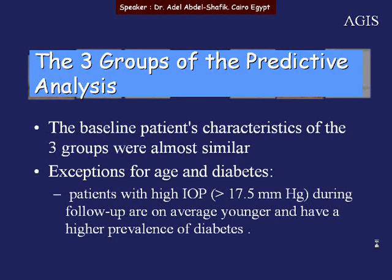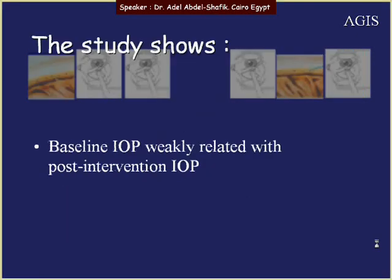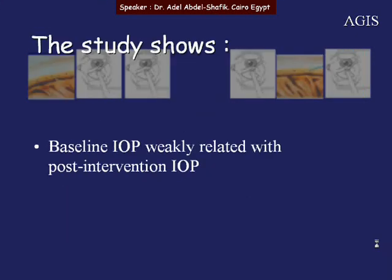The baseline patient characteristics across the three predictive analysis groups were almost similar, except for age and diabetes. Patients with high IOP — above 17.5 — during follow-up were on average younger and had a higher prevalence of diabetes. The study also showed that baseline IOP is only weakly related to post-intervention IOP.